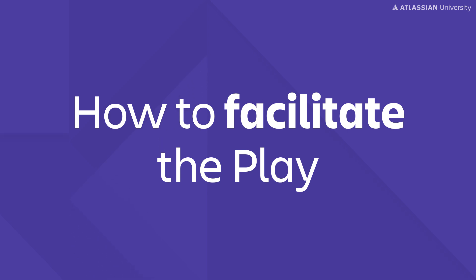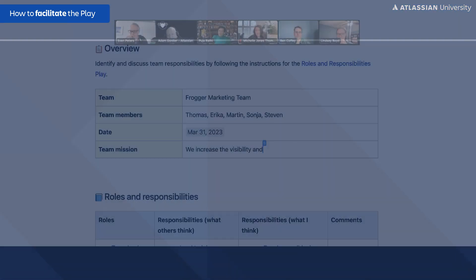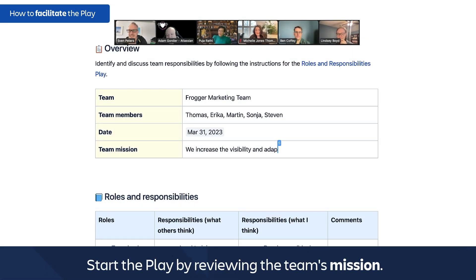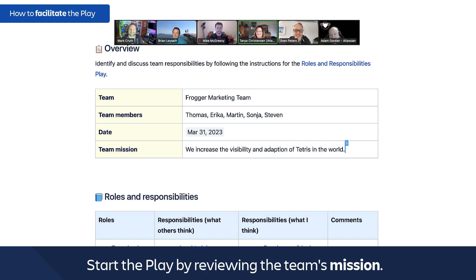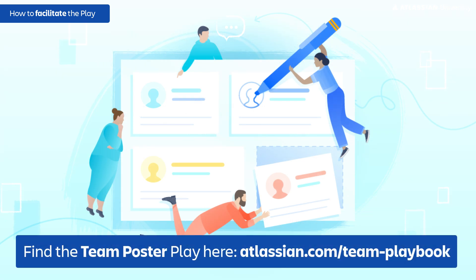If you want to follow along as we dive into things, click the link below to access the roles and responsibilities play. It explains all the steps in much more detail. Start the play by reviewing the team's mission to remind everyone what the team's overall responsibility is. It's important that you're on the same page about why you exist on the team. I also recommend running the team poster play from the Atlassian team playbook before this one, to get a shared understanding of what your team is doing.